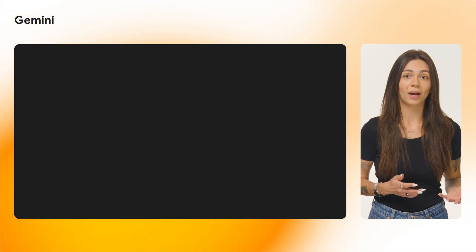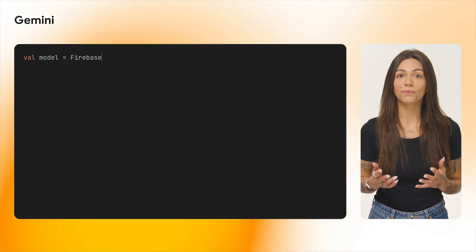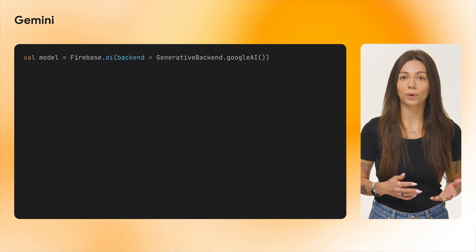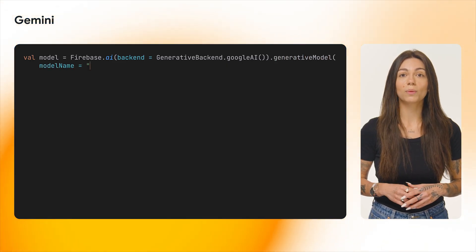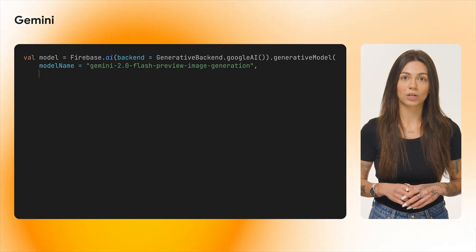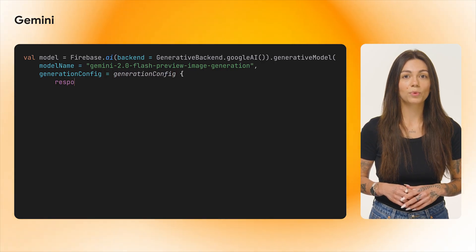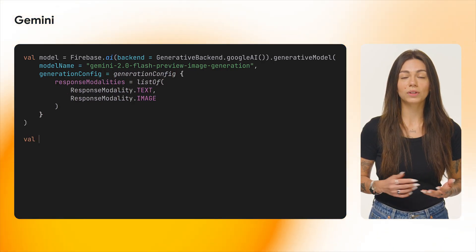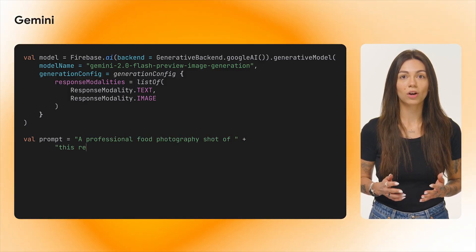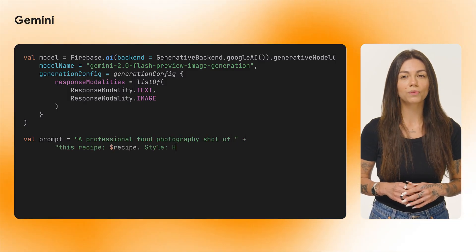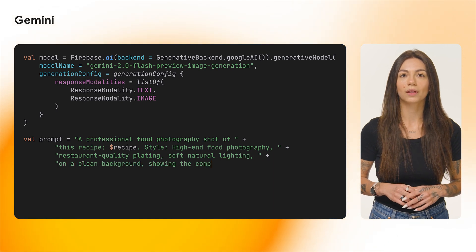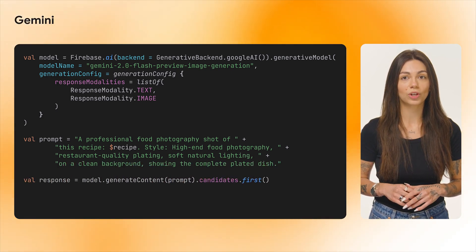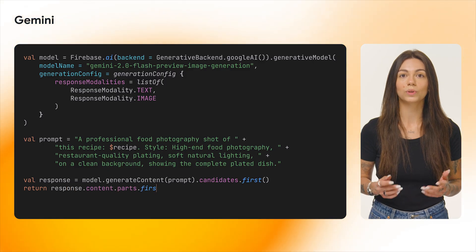To generate images with Gemini, first we need to get an instance of Firebase AI and choose the backend — here we're using the Gemini Developer API. Then we need to specify a Gemini model that supports image generation. Next, we provide a text prompt instructing the model to generate an image. For this app, we'll ask for a professional food photography shot of the generated recipe and provide some details about the style. The final step is to call the generate content function with the prompt we just created and handle the response with the code we see on screen.